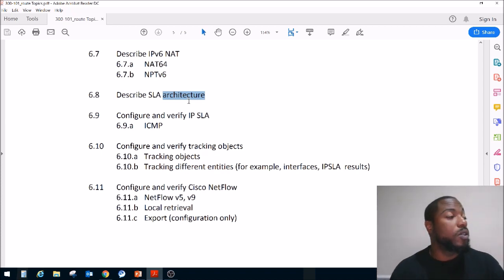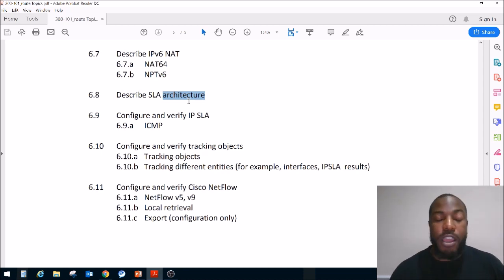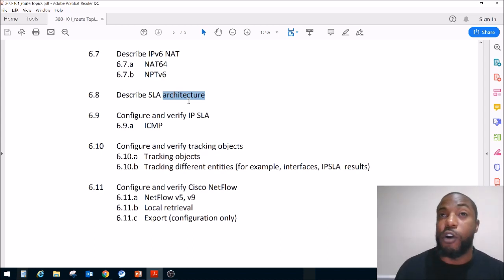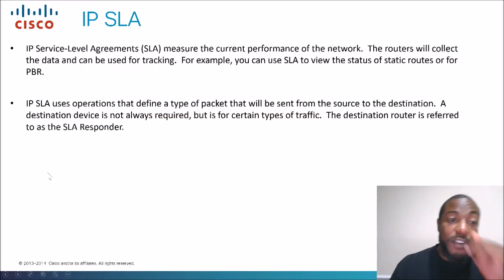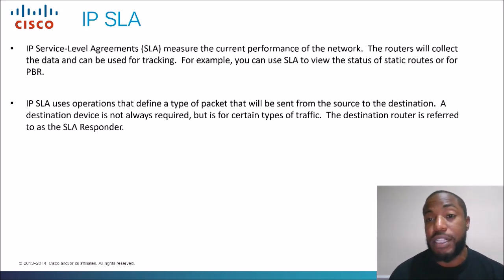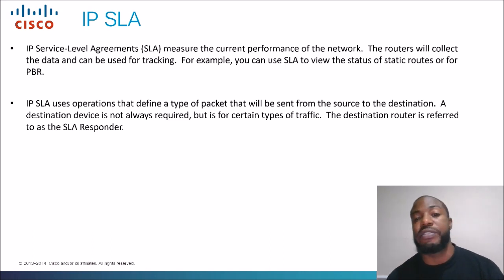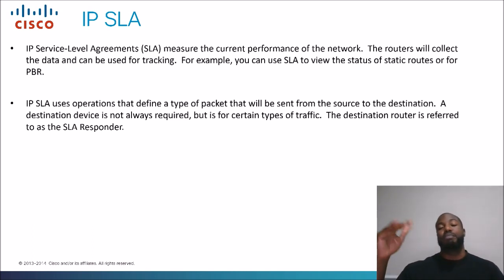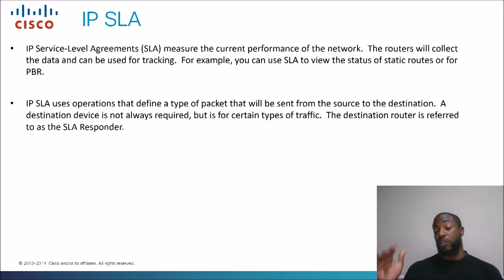In terms of networking, a service level agreement could say that the quality of your video is going to meet a certain standard 99% or 95% of the time. Let's look at the official definition: IP service level agreements measure the current performance of the network. Routers collect the data and it can be used for tracking. For example, you can use SLA to view the status of static routes or for PBR. We're saying this is how much service we're going to give you — don't expect more, but you should not expect less either.